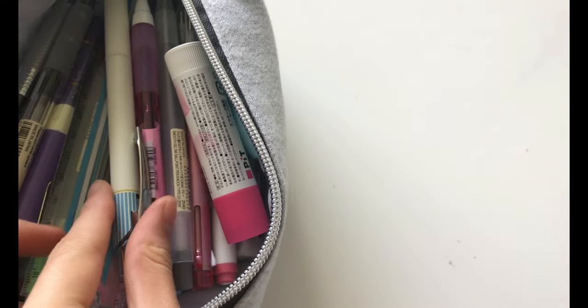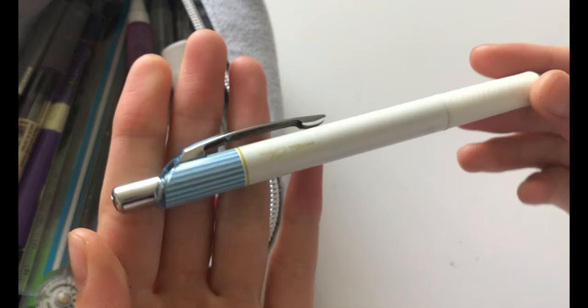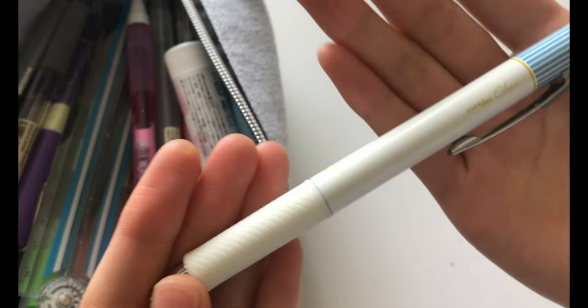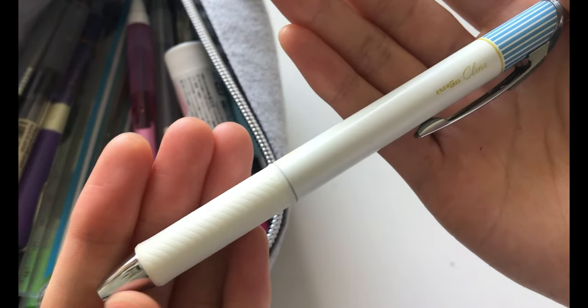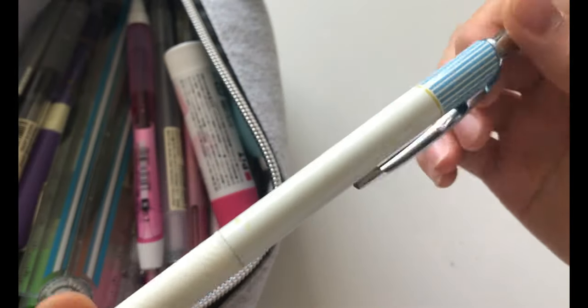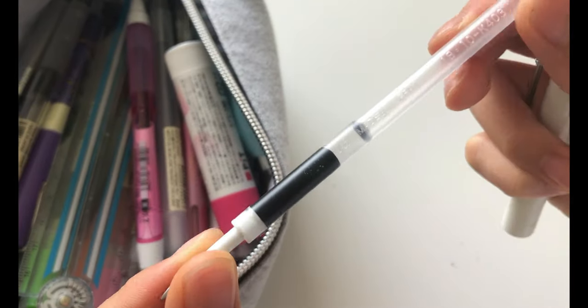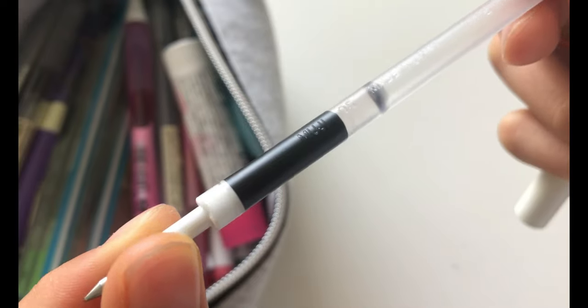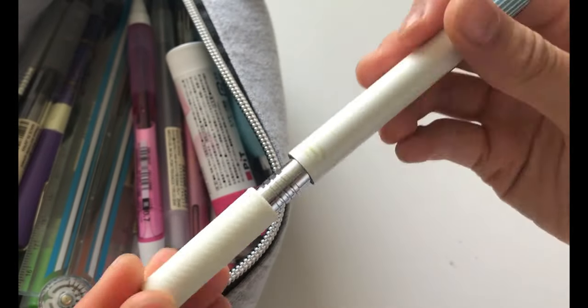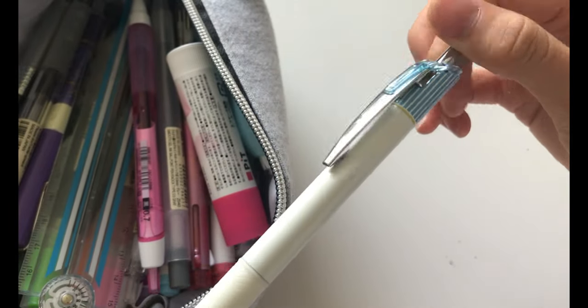The main pen that I use is the Pentel Energel Cleaner, but the inside is the Muji 0.5 gel pen. So I really liked the outside of the Cleaner, but I didn't have a lot of the Pentel refills, so I decided to put in the Muji ones instead.